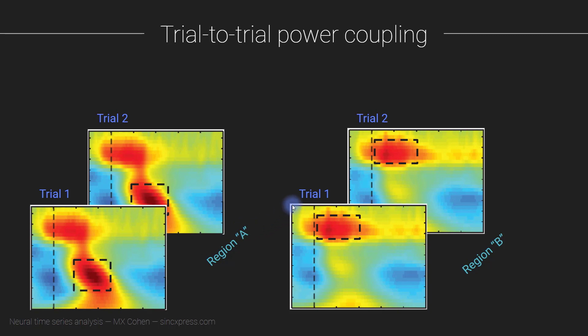So what you do—you can probably already guess—you define some region, you define some time-frequency region of interest, and that can be a different region of interest in the two electrodes. And then you extract the average power. So in this time-frequency region, let's say this is maybe 100 to 250 milliseconds and I don't know, 4 to 8 hertz up here—so I'm just making up these numbers, but it's just a bit of an illustration.